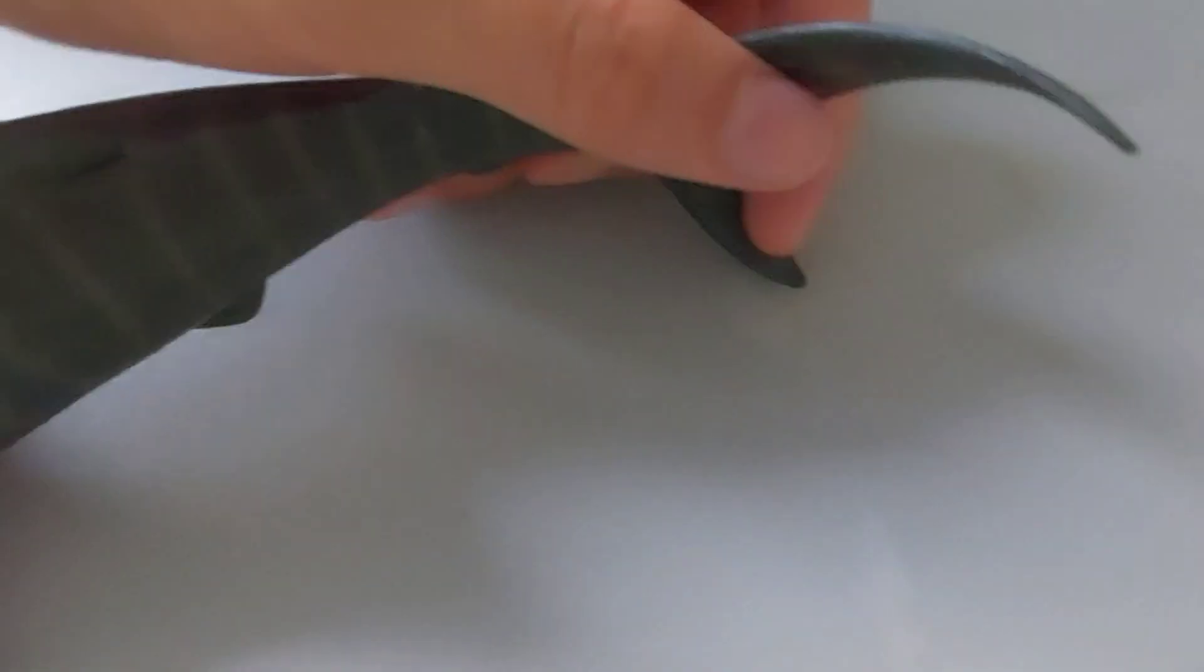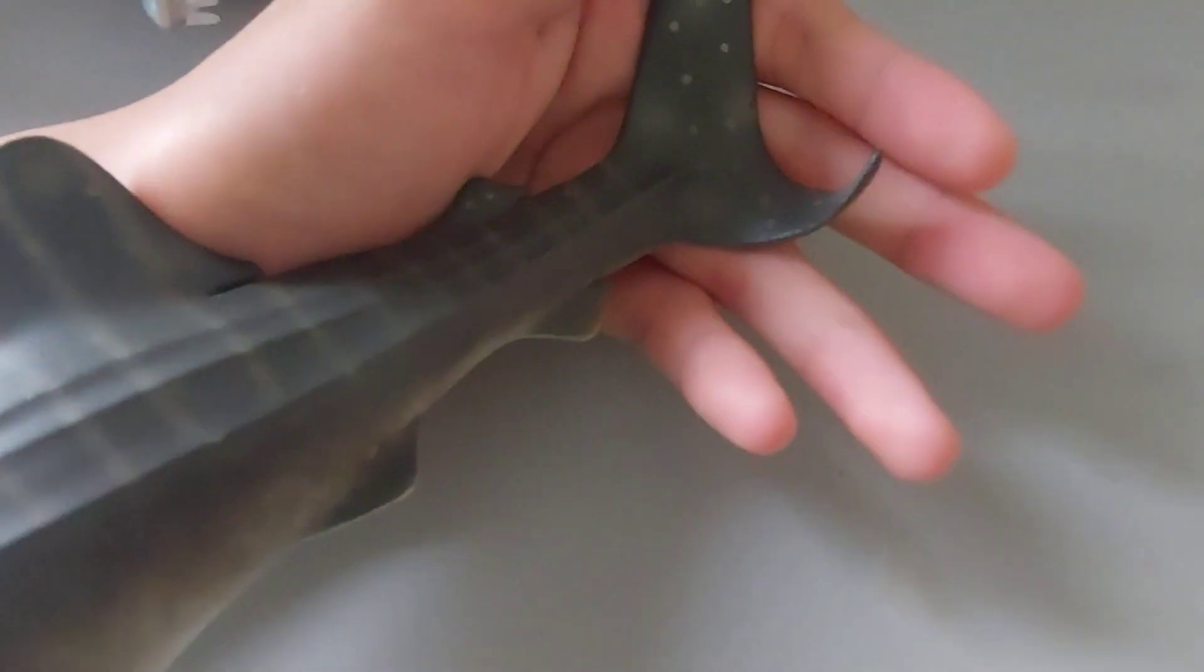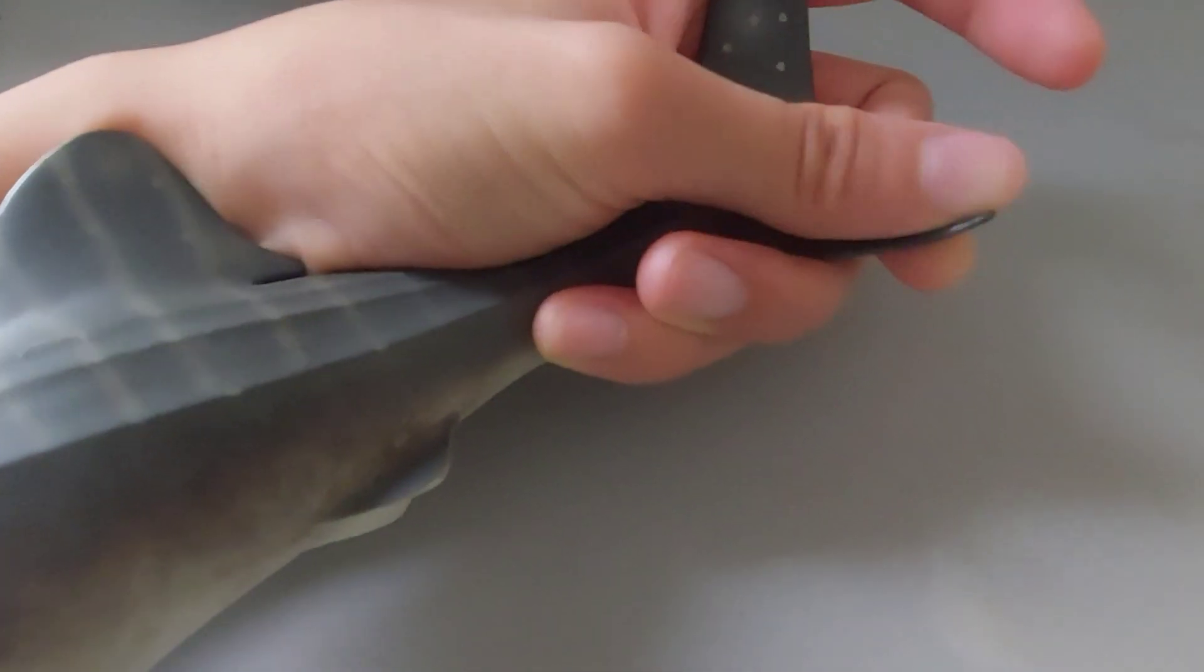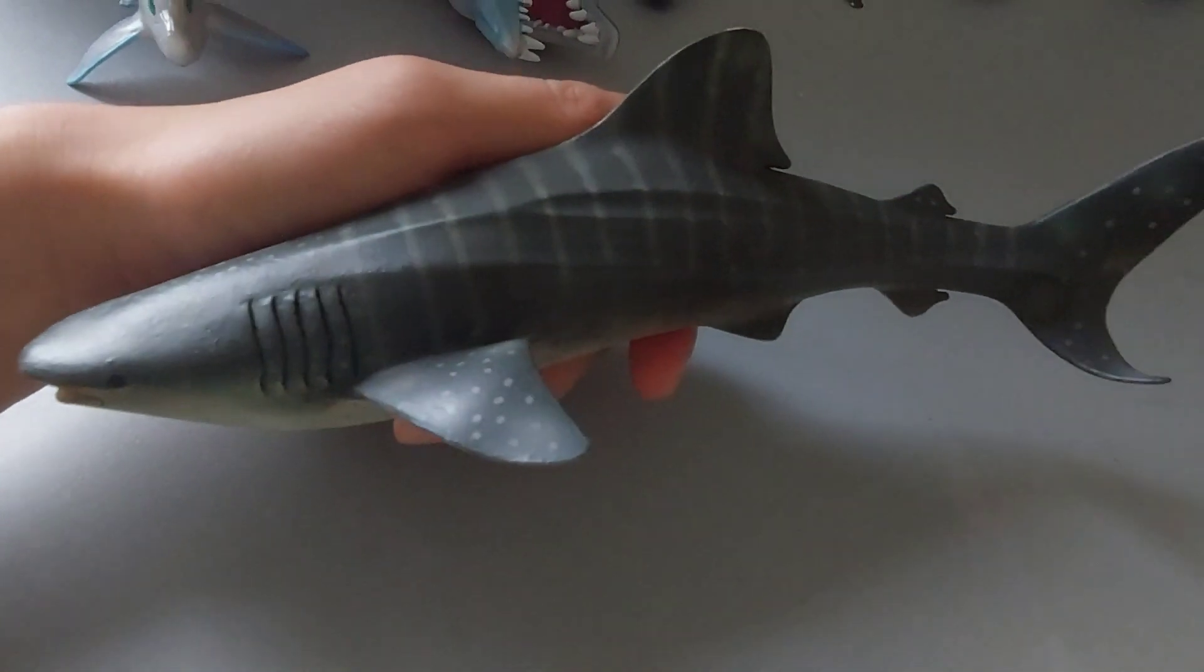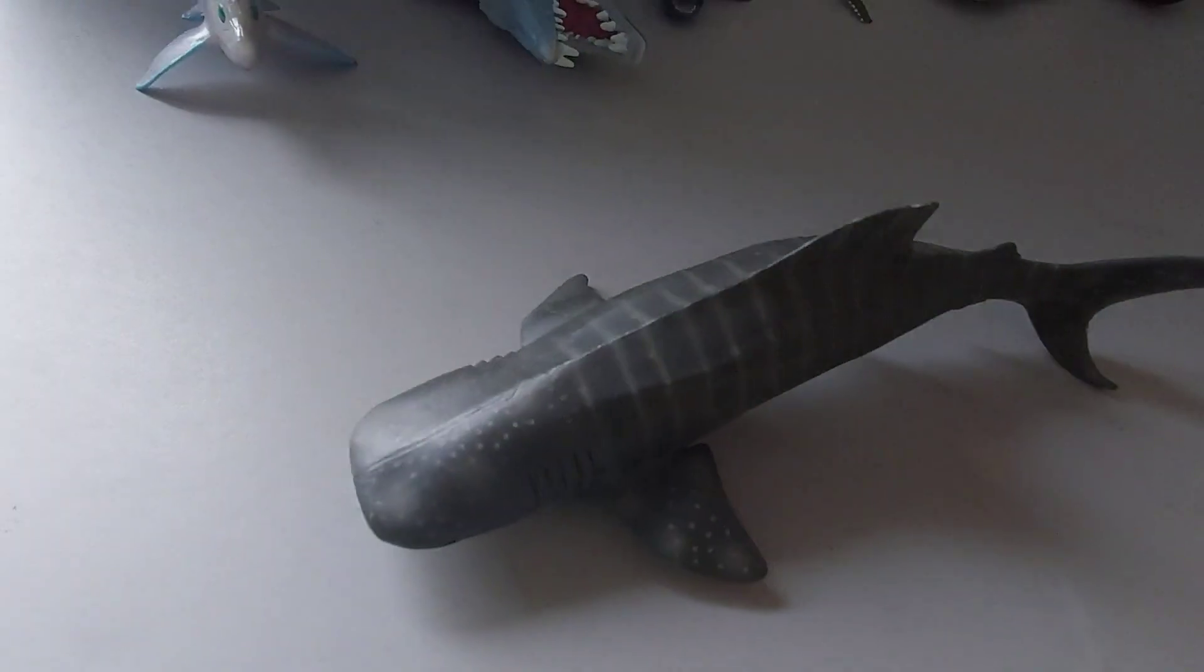But I guess this is a specimen with not a lot of dots because all whale sharks are all unique. None of them have the same dot pattern. Even if it's so similar, there's just a slight difference. That's why everything is unique.